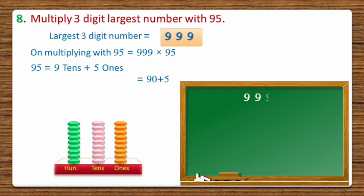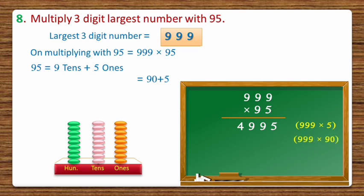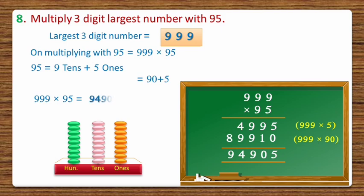So let's multiply 999 with 95. First we multiply 999 with 5 ones and get the value 4,995. Then on multiplying 999 by 90 we get 89,910. So on multiplying 999 with 95 we get the value 94,905.